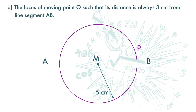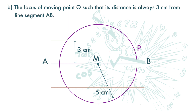Part B: the locus of moving point Q such that its distance is always 3 centimeters from line segment AB. For this, we get a line that is 3 centimeters from line segment AB, and also one more line below that is 3 centimeters from line segment AB. These two lines are the locus of Q such that it is always 3 centimeters from line segment AB.